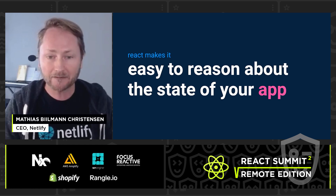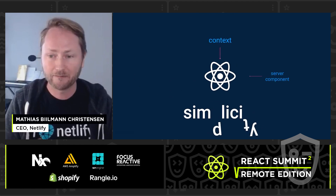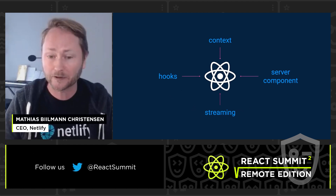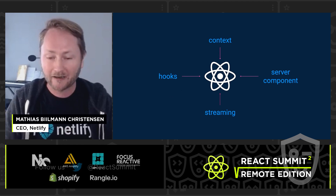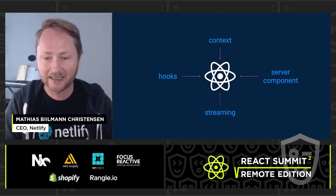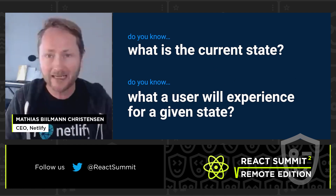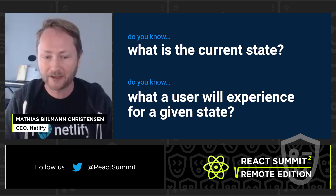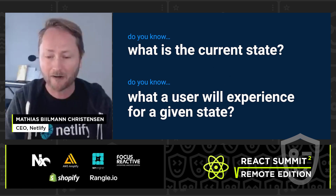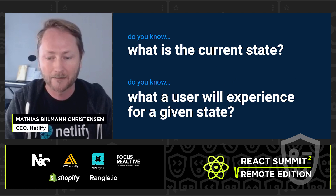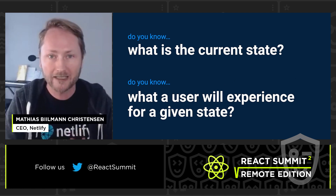React fundamentally made it easy to reason about the state of your application, and that was one of the superpowers that made React powerful and widely adopted. As we want React to solve harder problems and more of the challenges of building applications, we're introducing new concepts like context, hooks, the proposed server components, and streaming. As we go along this way, it's important to be curious and excited, but also to keep ourselves honest: do we still know what is the current state of our application, and do we know what a user will experience for a given state?